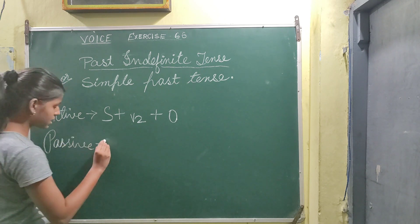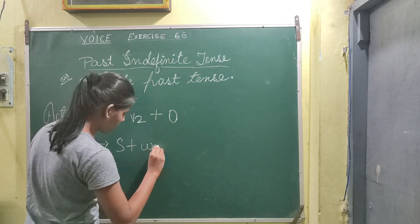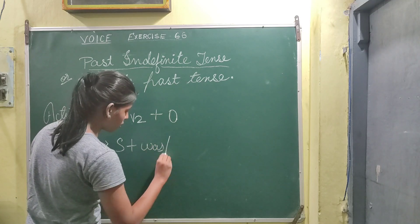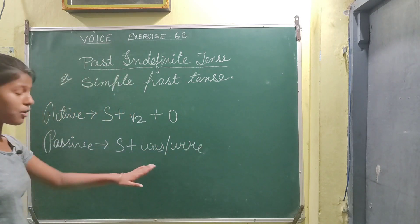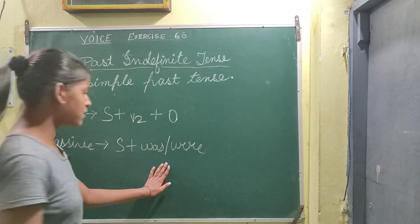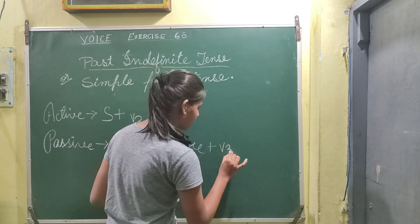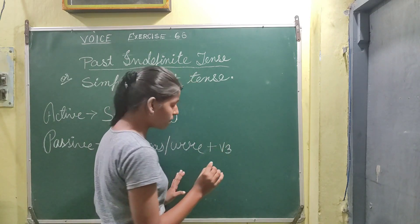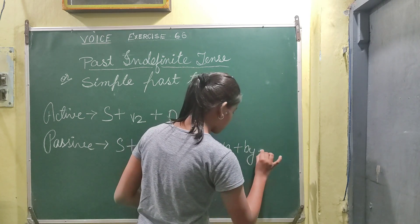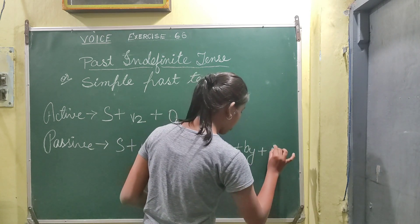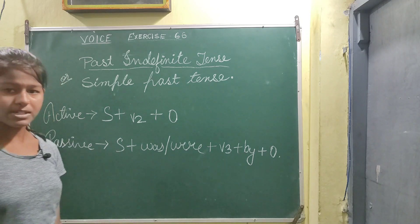We will see what is passive structure when we change it. Passive structure is subject plus was or were — we will see was or were based on the subject — then V3 third form, after that 'by', then object. Let's understand some examples.